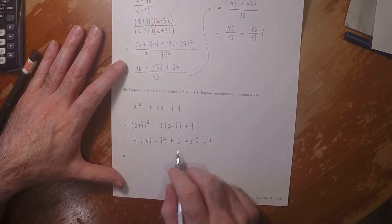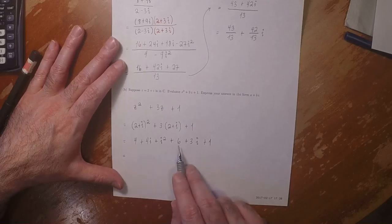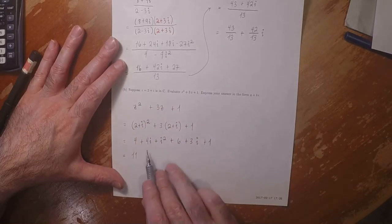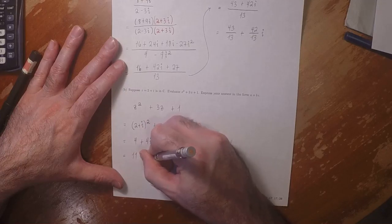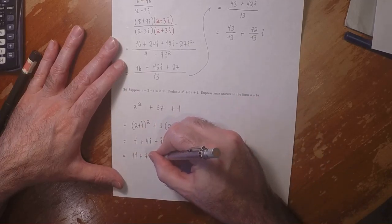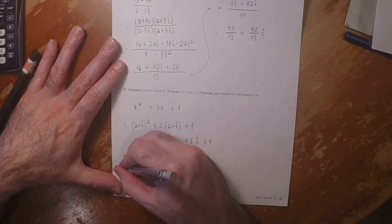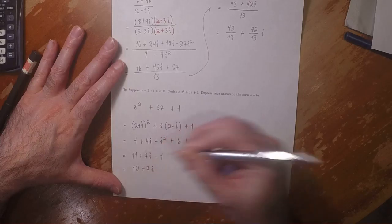Combining together the like terms, 4 plus 6 plus 1 is 11, and then 4i plus 3i is 7i, and then minus 1. That would be 10 plus 7i.